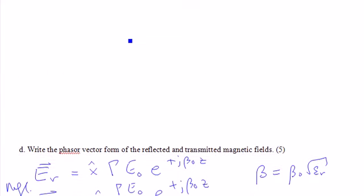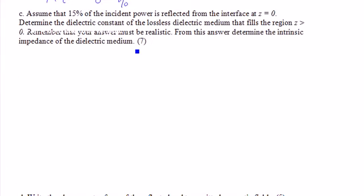Okay, so let's go up here to part C. So, the reflected power, which is what we were given there, says 15% of the incident power is reflected.